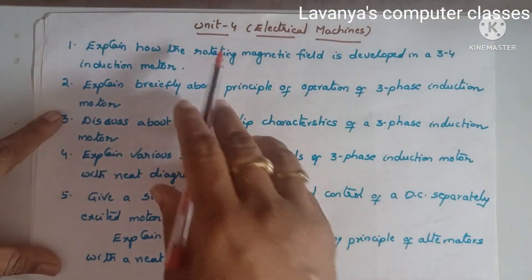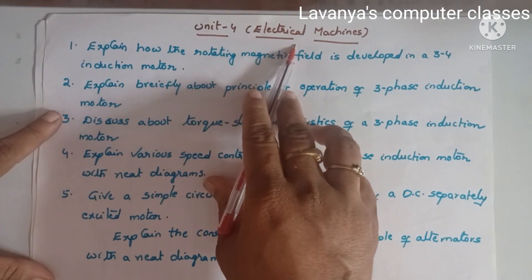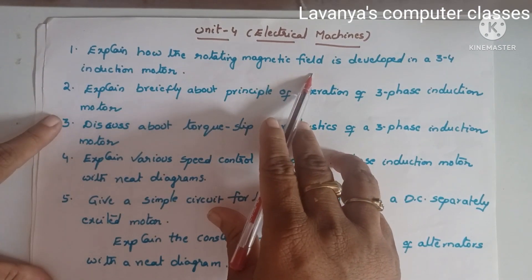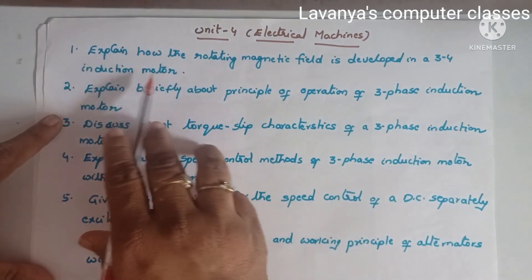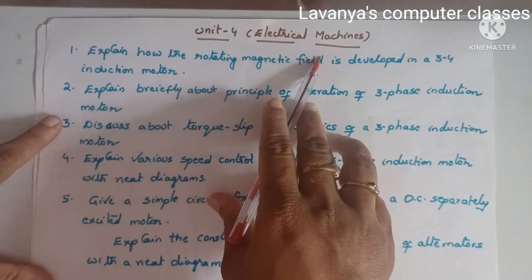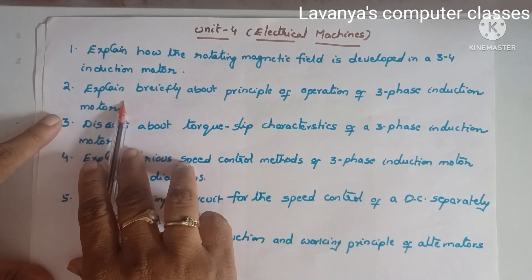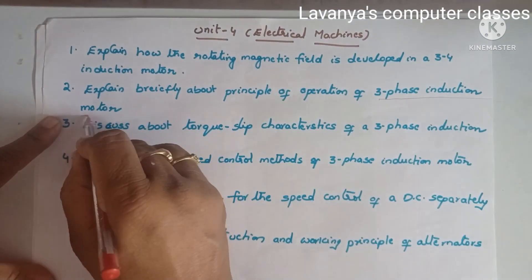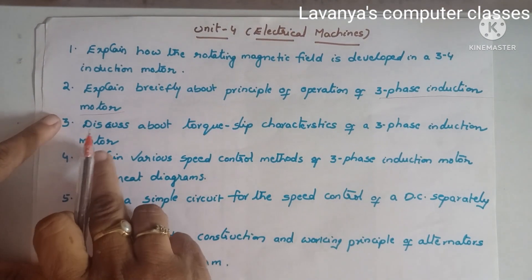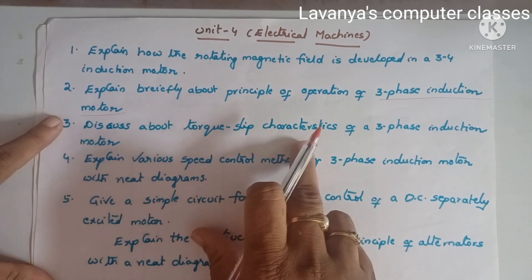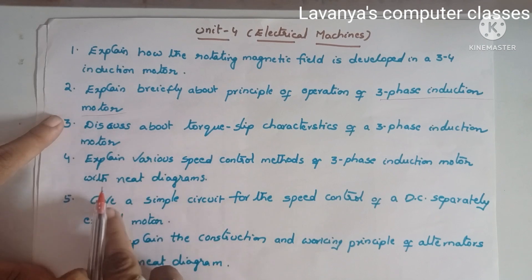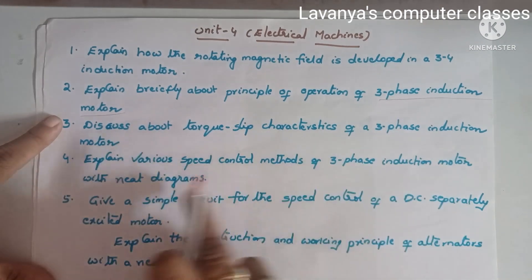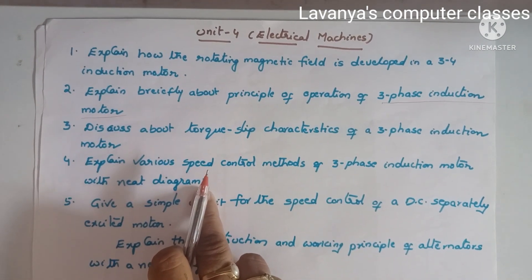Unit 4 is electrical machines. The important questions are: explain how the rotating magnetic field is developed in a three-phase induction motor; explain briefly the principle of operation of a three-phase induction motor; discuss torque-slip characteristics of a three-phase induction motor.